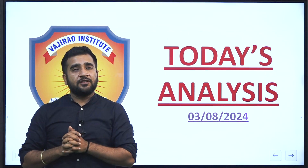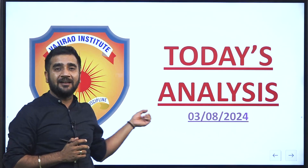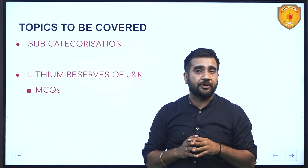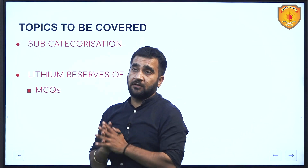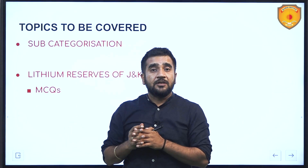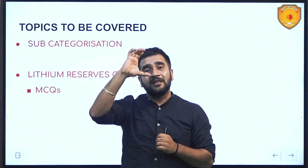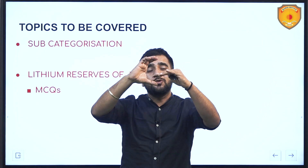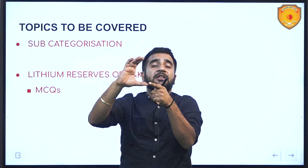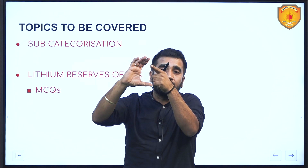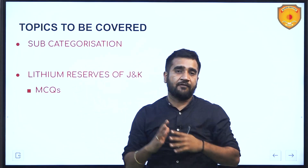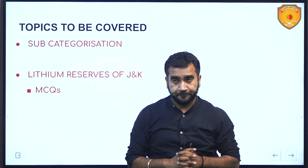Hello friends, I am Arpit and today is the third of August. We are going to deal with two very important topics in the news. First, sub-categorization of Scheduled Castes and Scheduled Tribes — the Supreme Court in a landmark 6-1 judgment, where six out of seven judges favored sub-categorization. Sub-categorization means that the SC category will be sub-classified into those who have got the benefits of reservation and those who have not. Those who have not got benefits will be given more attention, and those who have got benefits will be given less — but they are not removed from the net of reservation.